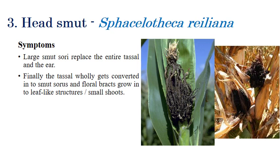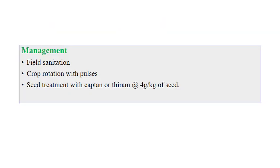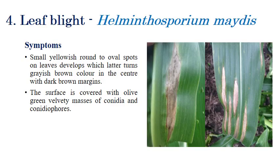Coming to the symptoms of head smut caused by Sphacelotheca: the entire inflorescence or entire cob is converted into black powdery masses. The tassels are also converted into leaf-like structures — everything converted into black powdery masses, as seen in both pictures. Coming to management: field sanitation is very important, along with crop rotation with pulses. Seed treatment with captan or thiram at the rate of 4 grams per kilogram of seed is recommended.